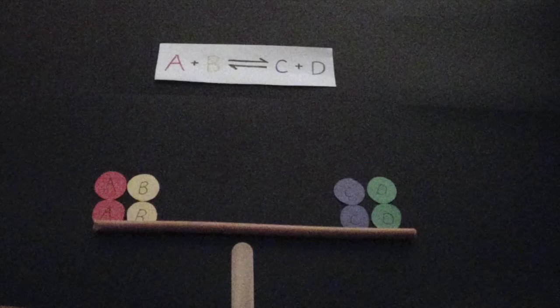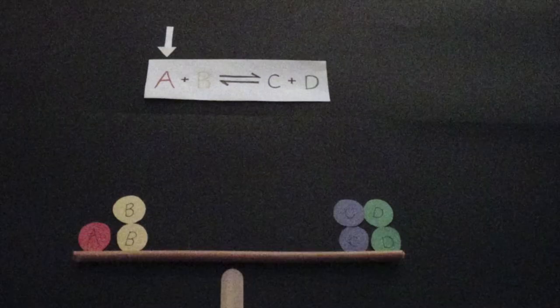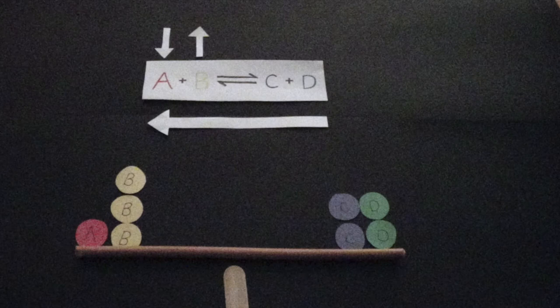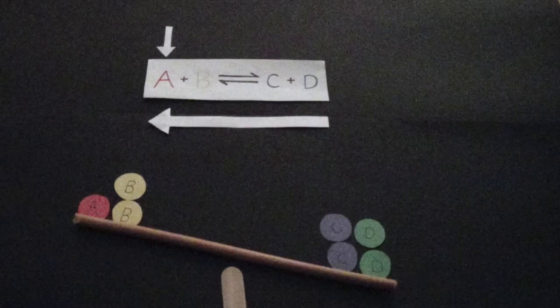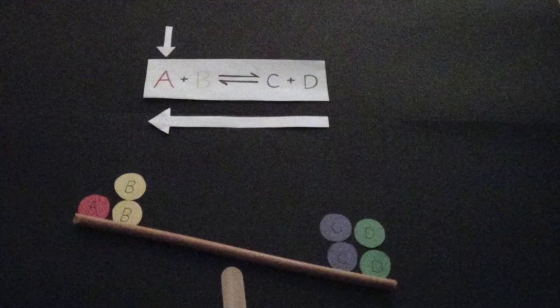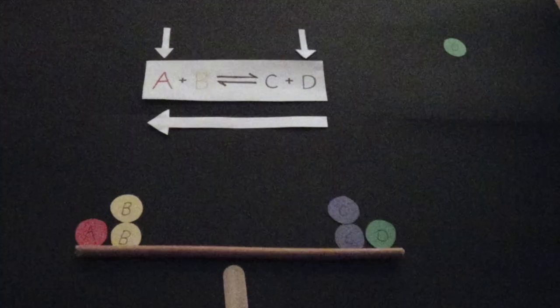If you decrease the concentration of reactant A, then the reaction will shift to the left in order to re-establish equilibrium. You can increase the concentration of reactant B, or decrease the concentration of product C or product D.